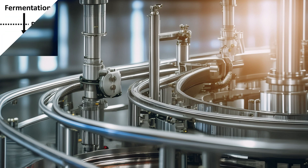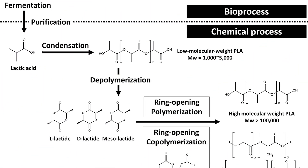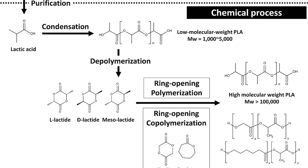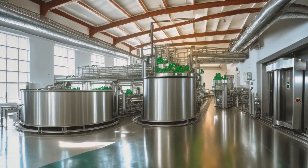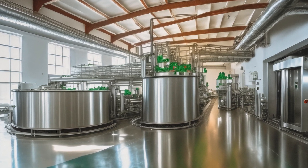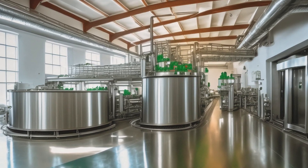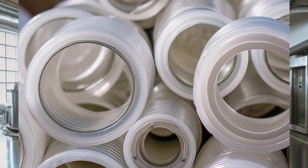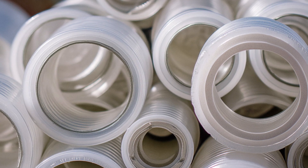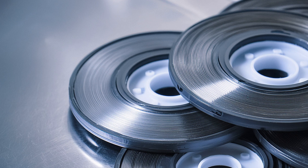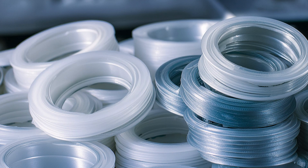The production of PLA starts with the fermentation of sugars into lactic acid using microorganisms. These lactic acid molecules are then chemically polymerized to form polylactic acid. This production process emits less carbon compared to traditional plastics and has a lower environmental impact due to the use of renewable resources.